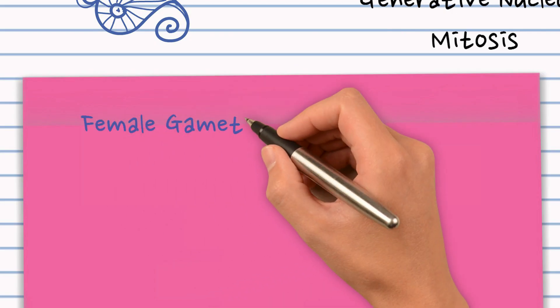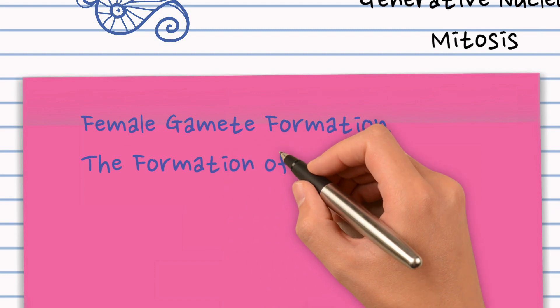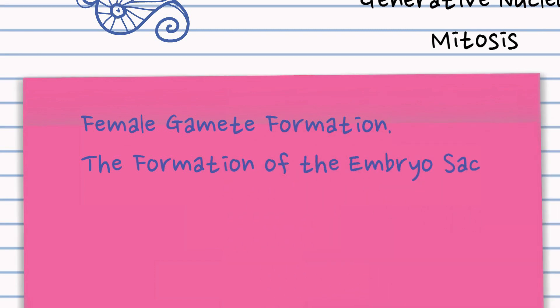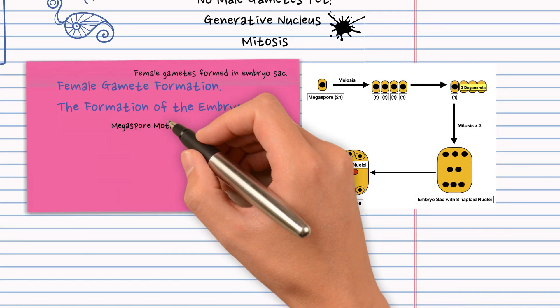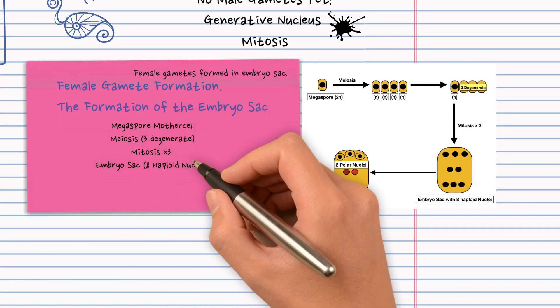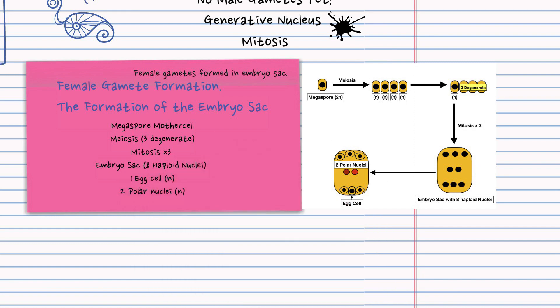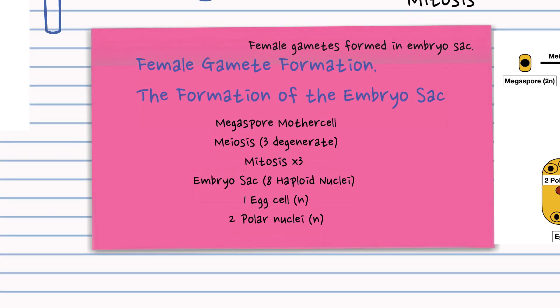So next is female gamete formation, the formation of the embryo sac and it's inside the embryo sac where those female gametes will be formed. So it started with the megaspore mother cell undergoing meiosis and remember one remains and undergoes mitosis three rounds of it. So we end up with an embryo sac with an egg cell and two polar nuclei.